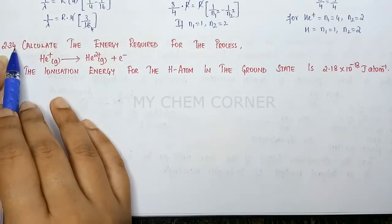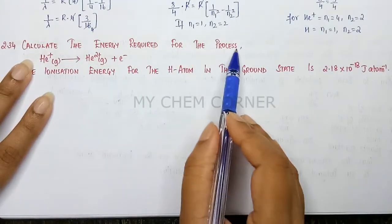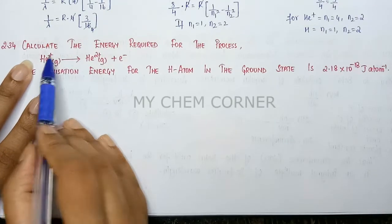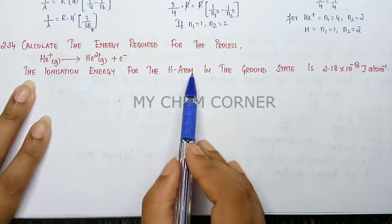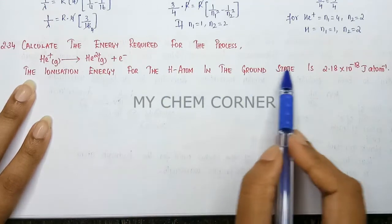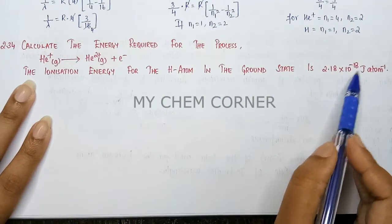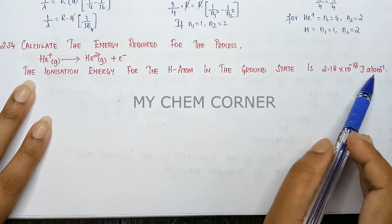Now, question 2.34: Calculate the energy required for the process He²⁺ → He³⁺ + e⁻. The ionization energy for the hydrogen atom in the ground state is 2.18×10⁻¹⁸ joules per atom.